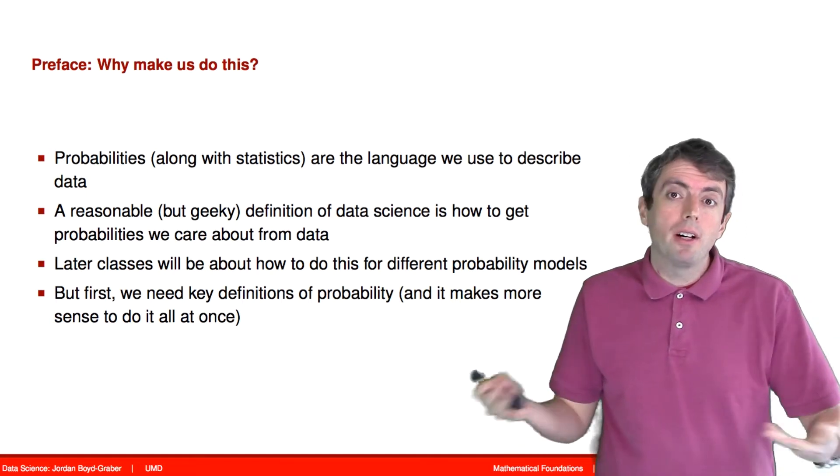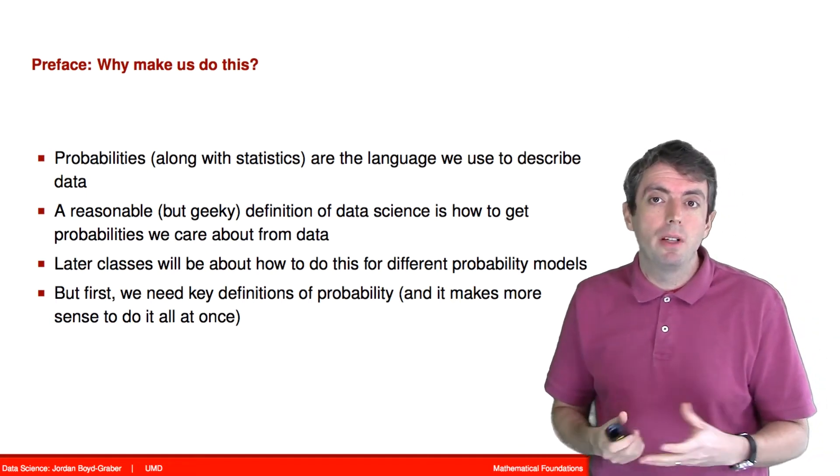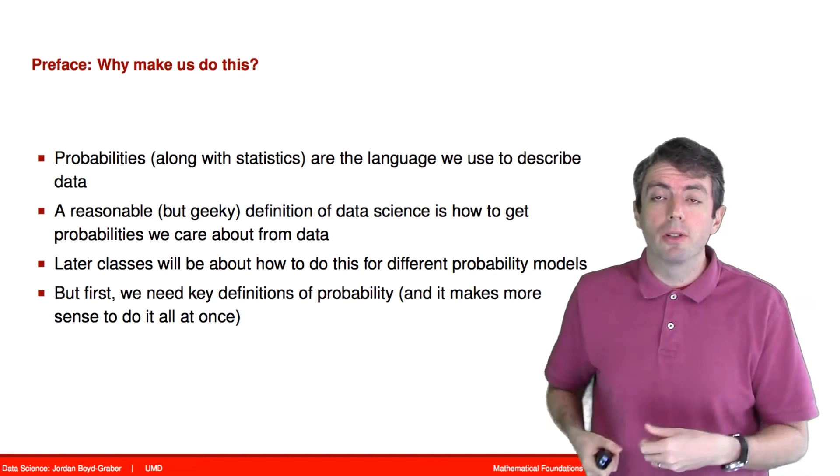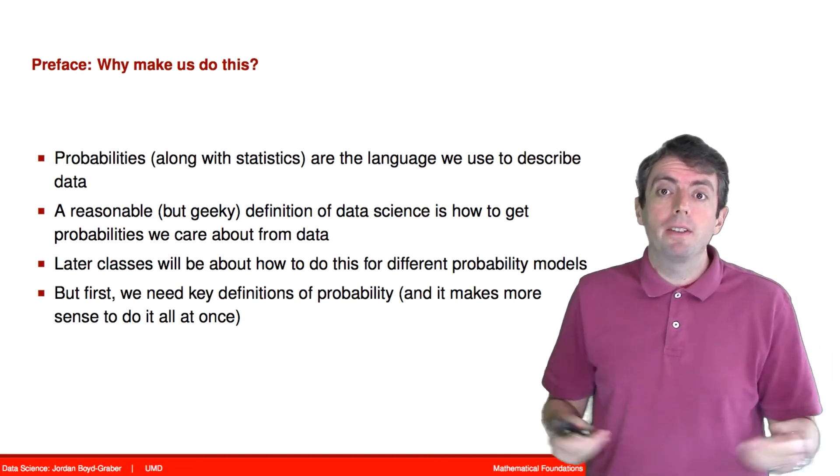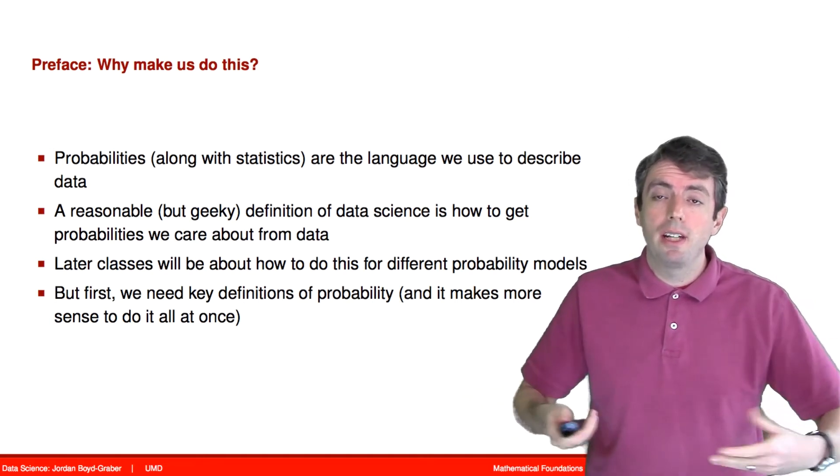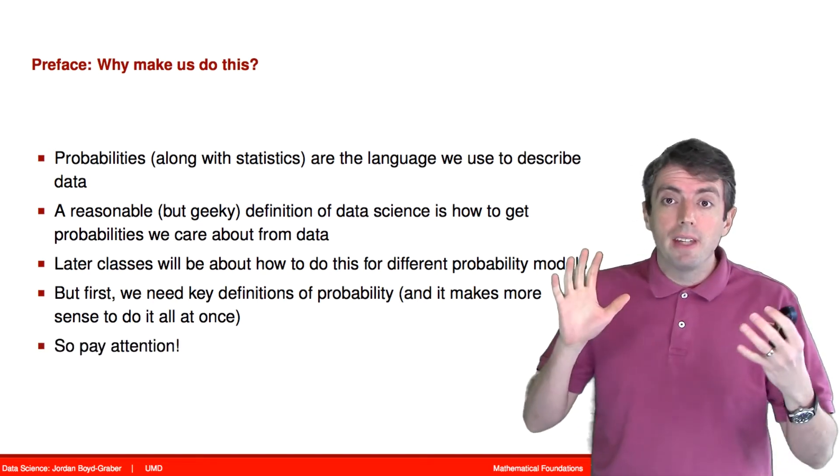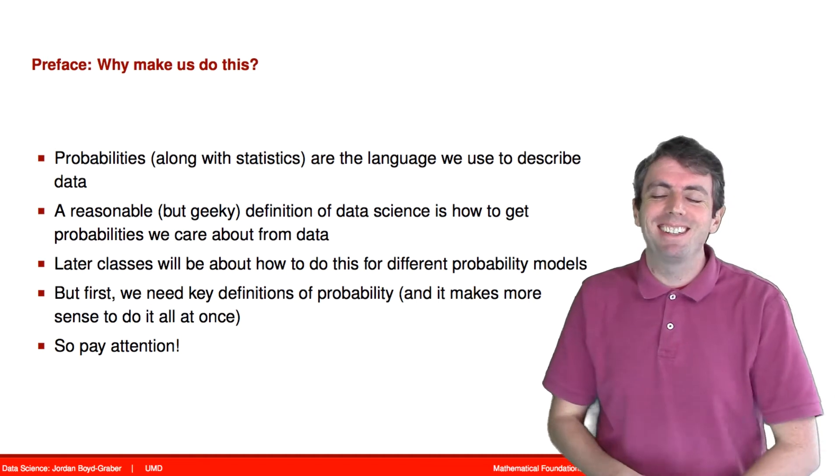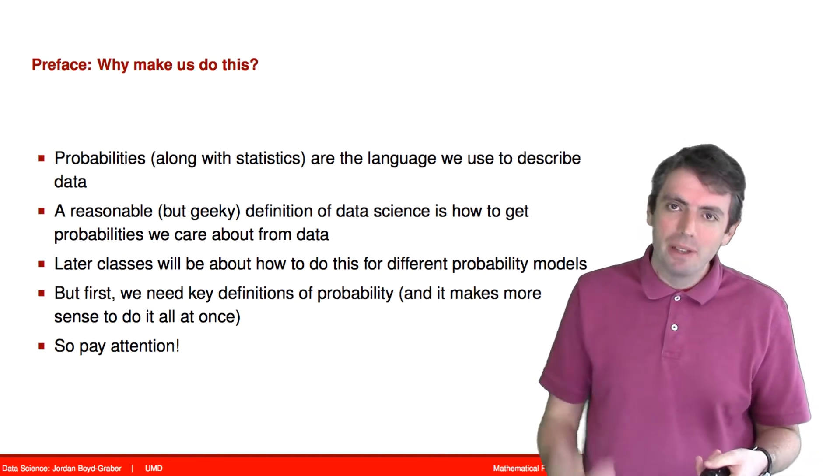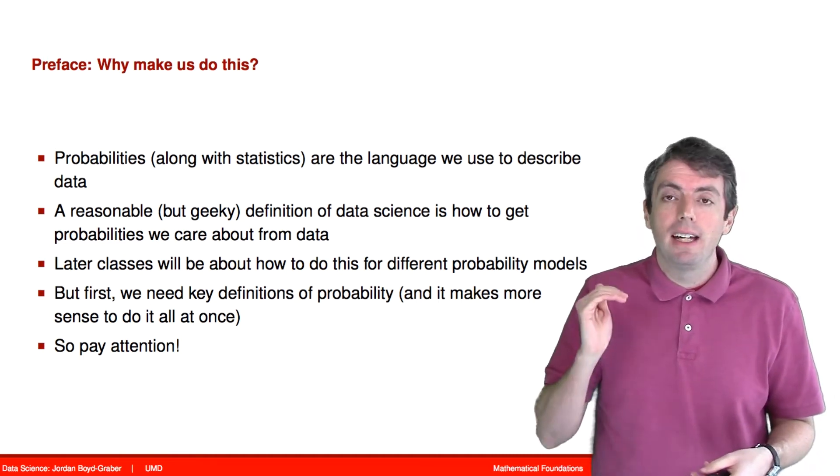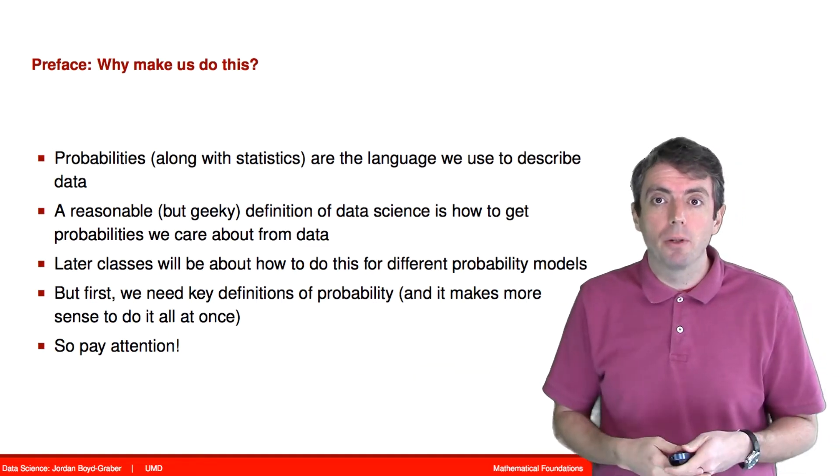While much of what we talk about in the data science class will be about algorithms that we're using to extract probabilities, the very first thing that we need to do is to understand what probability is and how to manipulate those probabilities. Given how important probabilities are to data science, it's really important that you pay attention to this. It will be the foundation for much of what happens in the rest of the course.